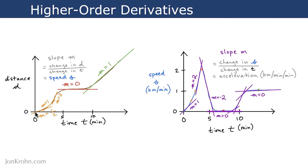Now, if we at every single time point calculate the tangent, calculate the slope of the curve, we can then plot those tangents as a second plot, and that would be a plot of speed over time. So the orange points here correspond to the orange tangent lines here. The red dot here, with a speed of 0, corresponds to this tangent line here, with a speed of 0.